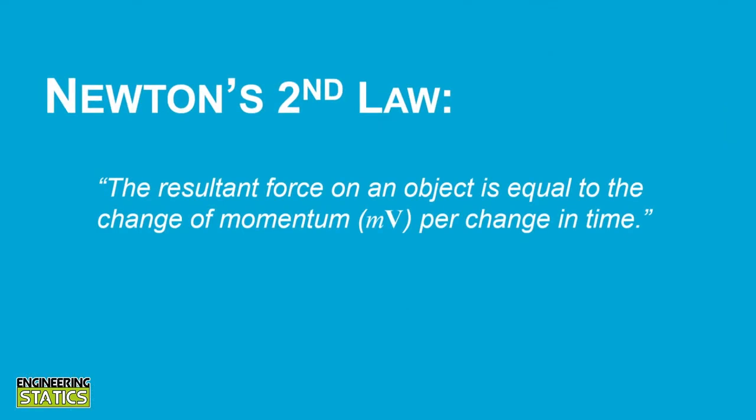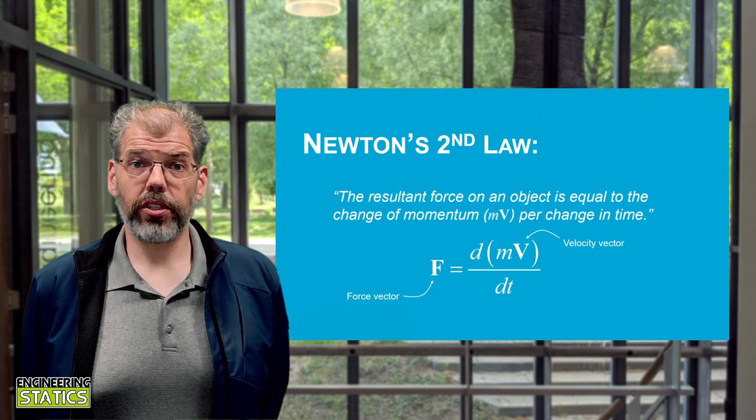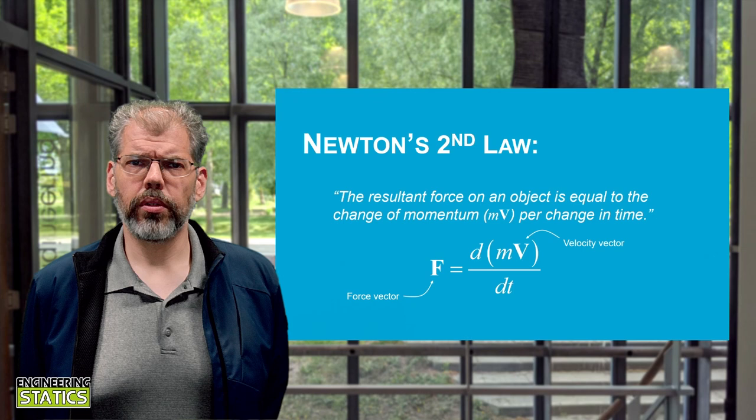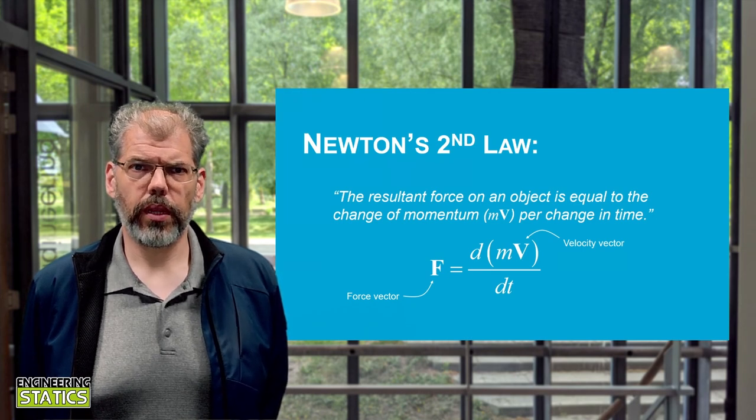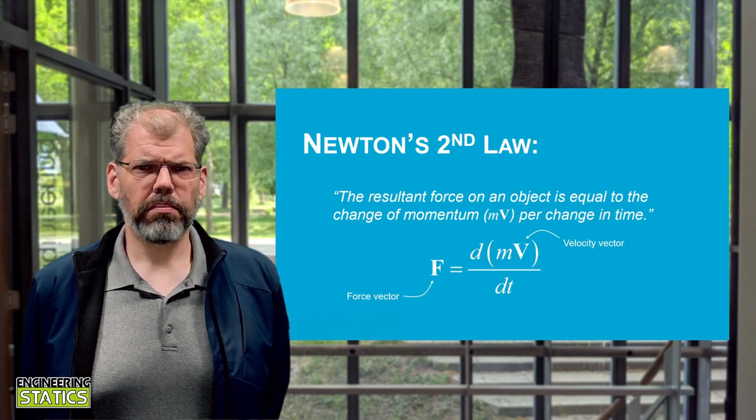Newton's second law states that the resultant force of an object is equal to the change in momentum per change in time. This can be written as F is equal to the time derivative of the mass times velocity. Now you're probably thinking to yourself, wait a second, that wasn't what I was taught in high school. We were taught that force is equal to mass times acceleration. So did your high school teacher lie to you? Well, yes and no.